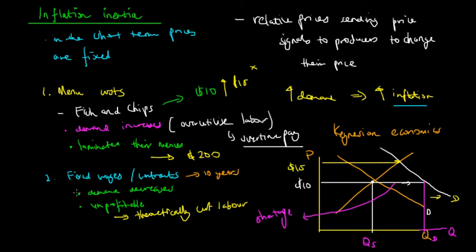So this contract is for ten years. So because they are fixed, these contracts, the producers can't cut labour. And therefore, their prices must stay at this point, at ten dollars,